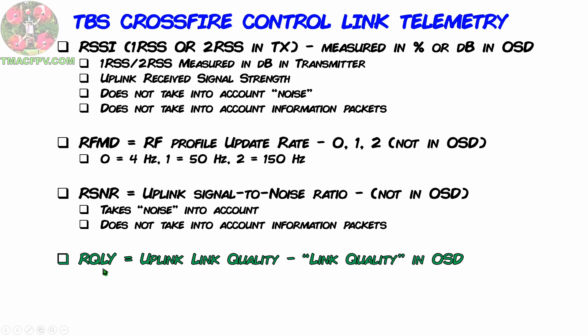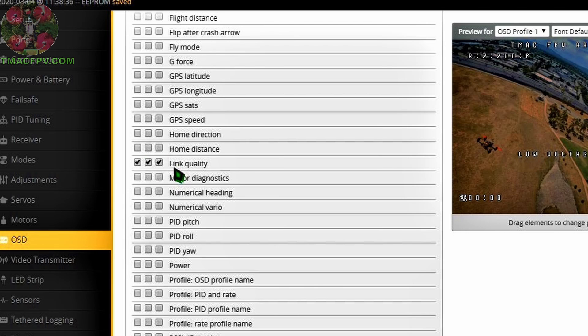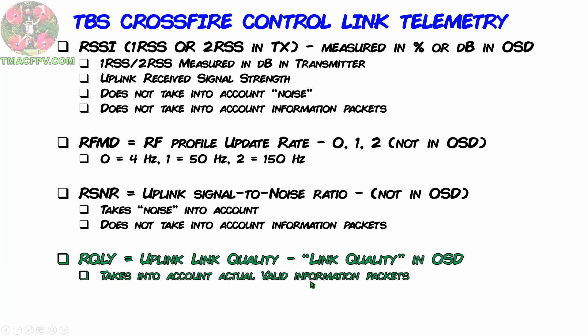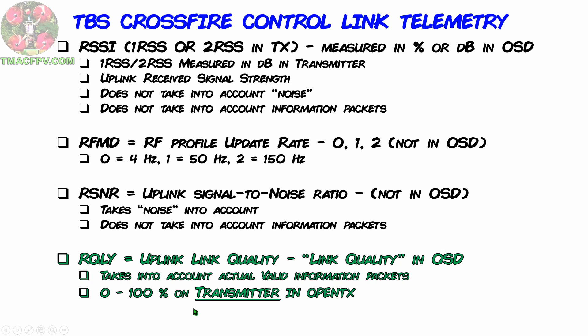The last one is RQLY, or your uplink link quality. This is available in your OSD and is labeled as 'link quality' as an option to enable. This takes into consideration valid information packets — or, in our analogy, words — so it takes into account whether or not your friend at the end of your seating aisle can actually understand what you're saying. It is measured in two different ways: in your transmitter, it's measured on a scale of 0 to 100%. On your OSD, it's scaled differently.